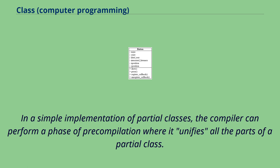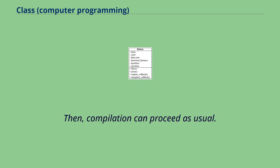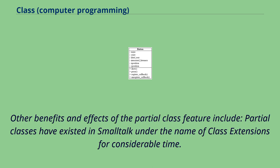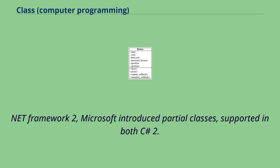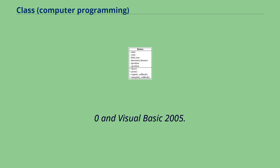In a simple implementation of partial classes, the compiler can perform a phase of pre-compilation where it unifies all the parts of a partial class, then compilation can proceed as usual. Partial classes have existed in Smalltalk under the name of class extensions for considerable time. With the arrival of .NET Framework 2, Microsoft introduced partial classes supported in both C# 2.0 and Visual Basic 2005. WinRT also supports partial classes.